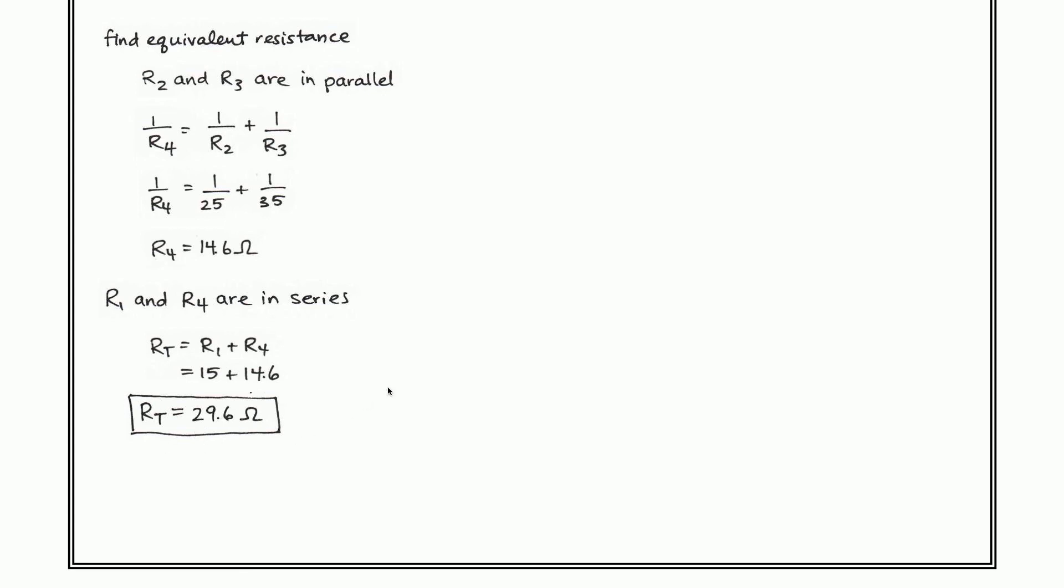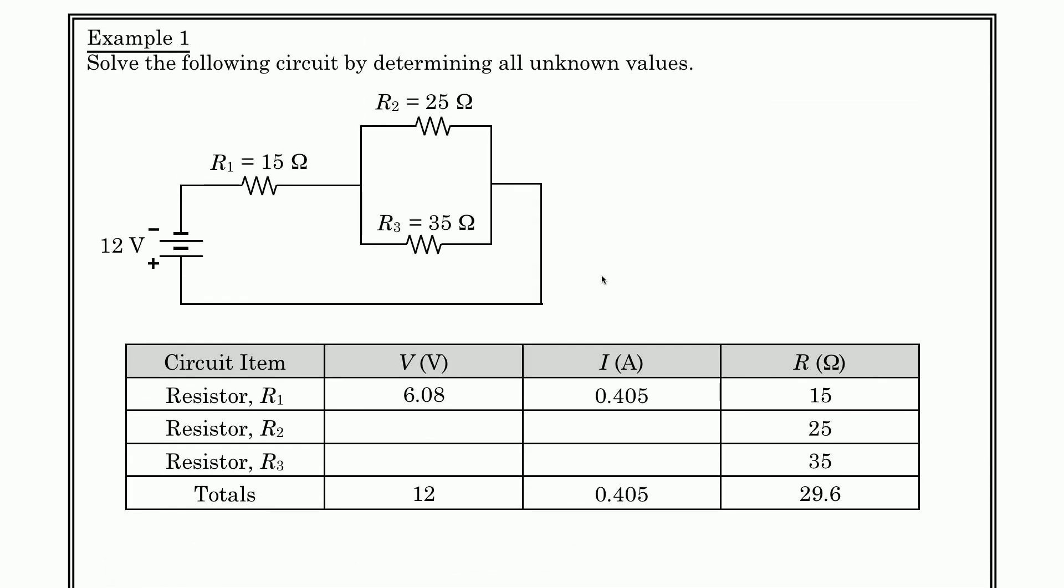And so now that we have this, we are well on our way to being able to solve the rest of the circuit. I now know the total voltage that was given to me, and now that I've calculated the total resistance, I can find out what the total current flowing in this battery is. The total current is equal to 0.405 amps. Now there's nowhere between the battery and the first resistor R1 for that current to go, so by inspection I can say I1 is 0.405. And because I know the resistance of R1, I can find the voltage through that.